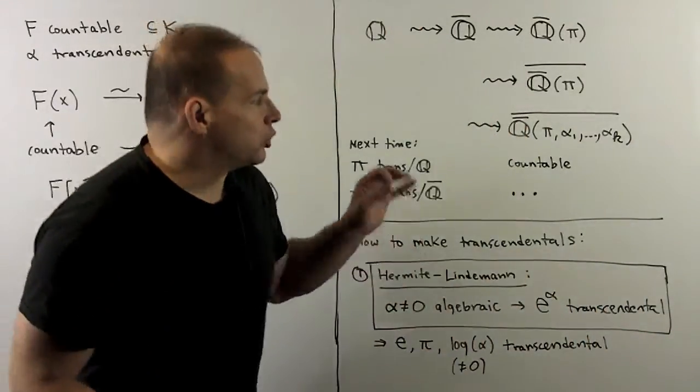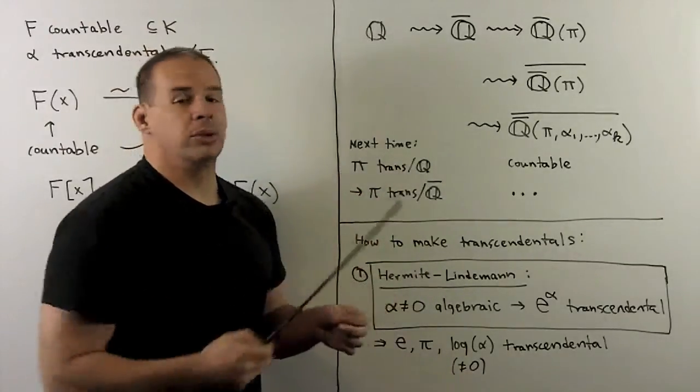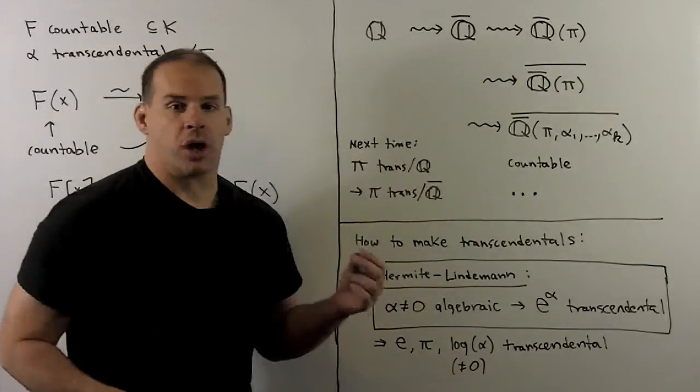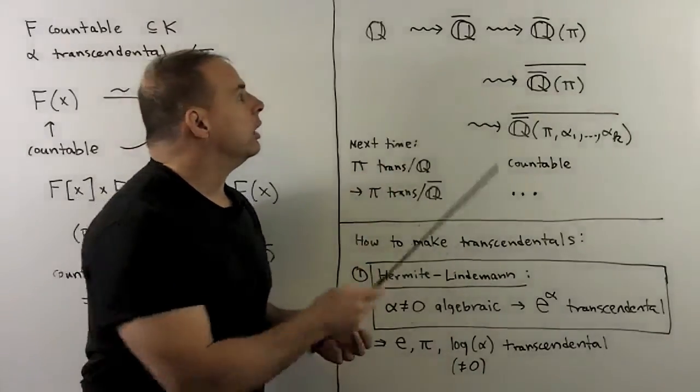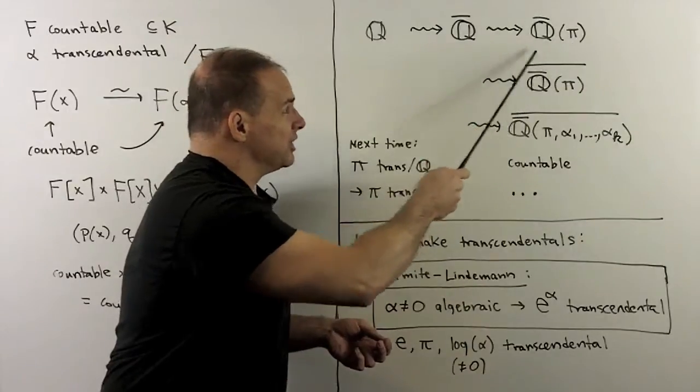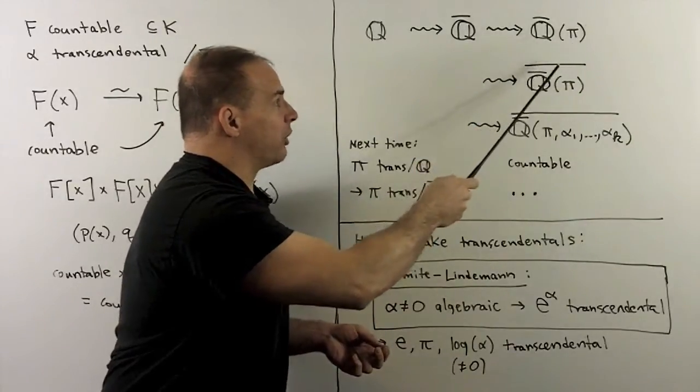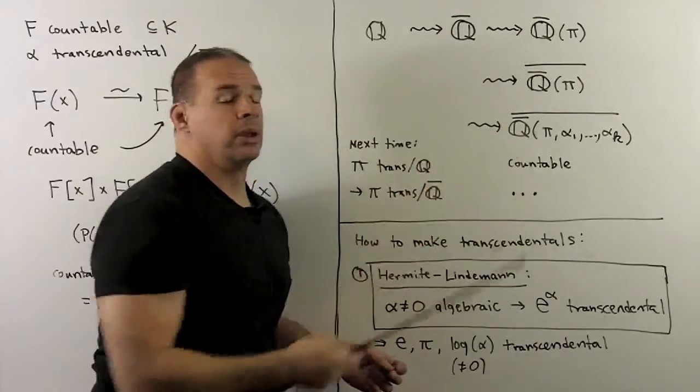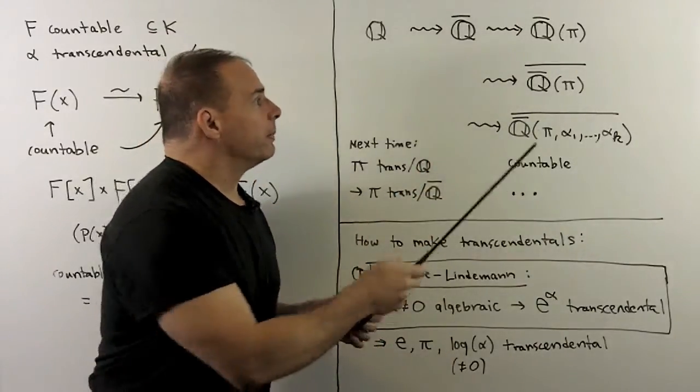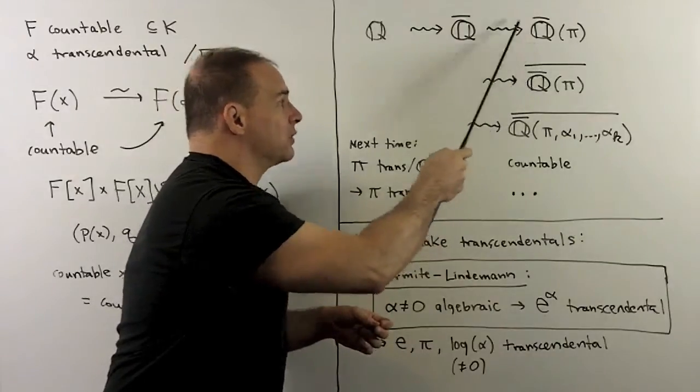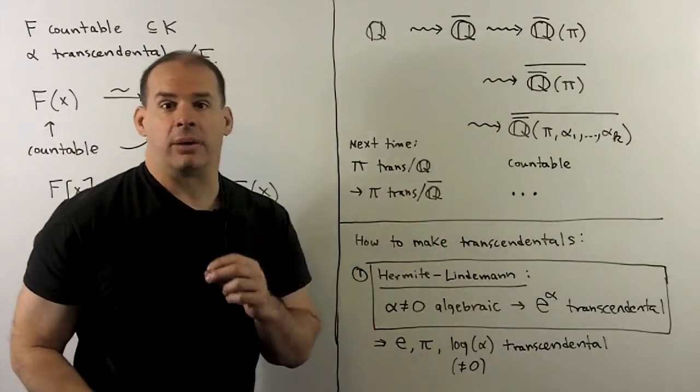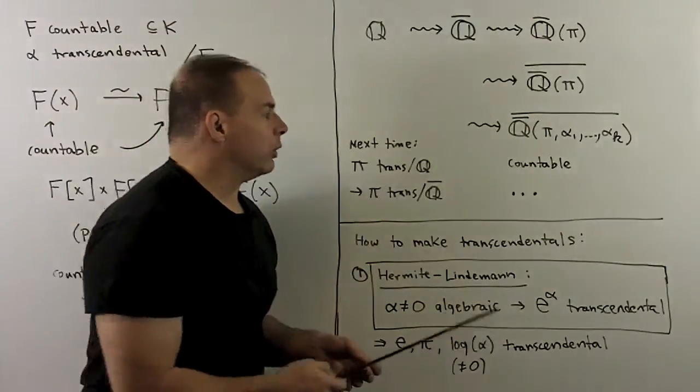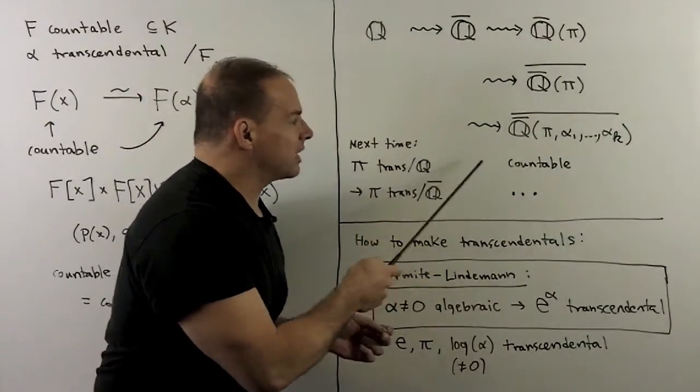Now we track out what we've been doing. We start with the rationals, which are countable. Go to the algebraic numbers. These are also countable. I take pi, a transcendental. We take the subfield generated by the algebraic numbers in pi. This is also countable. I could take all complex numbers that are algebraic over this field. Still countable. We keep repeating this process finitely many times. We still wind up with a subfield of the complex numbers that's countable.